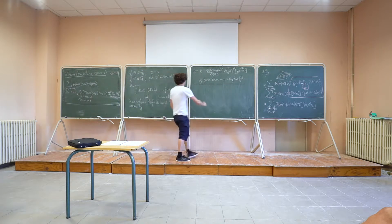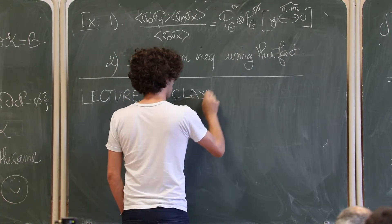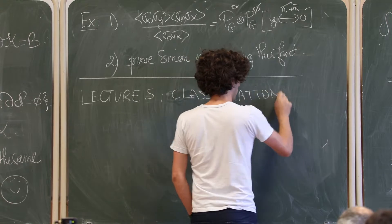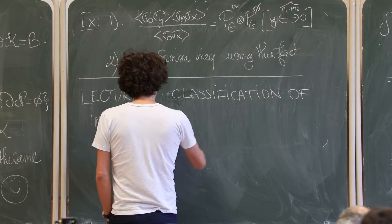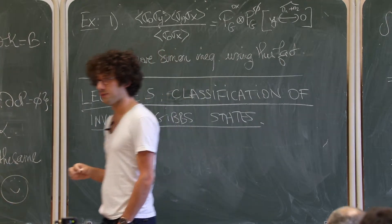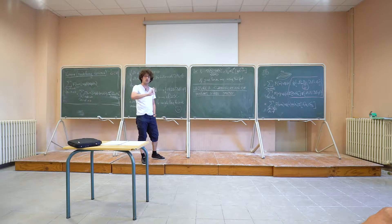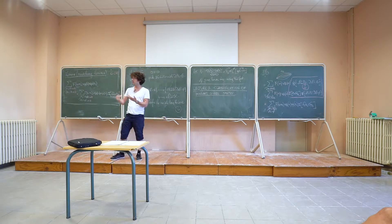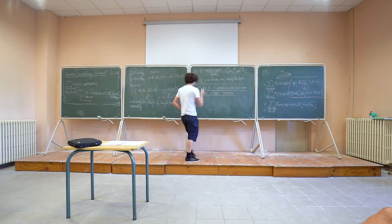Lecture 5: Classification of invariant Gibbs states. Our goal is to prove that if you take a Gibbs state — defined by the DLR condition — which is invariant under translation, then it must be a convex combination of the plus and minus states. Recall the definitions of the plus, minus, and free states. The free state ⟨·⟩^0_β is the limit as n→∞ of the measure in box Λ_n with free boundary conditions, obtained from the FK Ising model with φ^0.